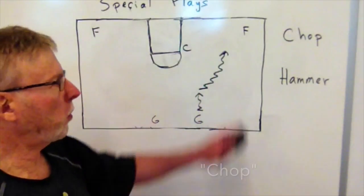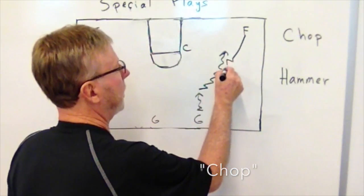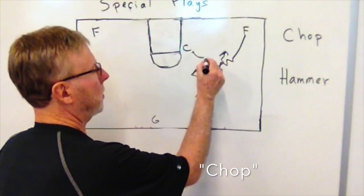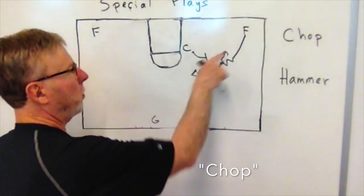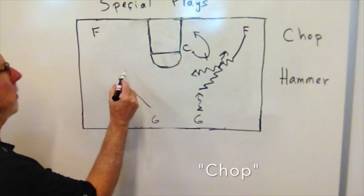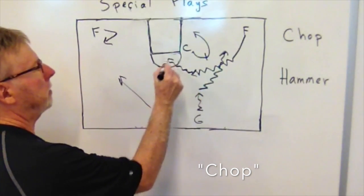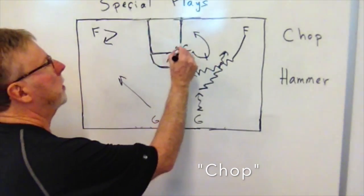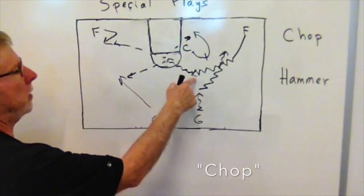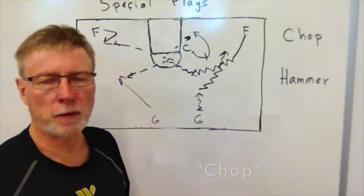On Chop, there's a hard dribble toward the forward, who times a ball exchange with that guard. The center sets a pick on the forward's defender as he comes around and rolls to the basket. The guard fans out. Coming around, we're looking for the layup, or we can make the pass for a three, or drop it off to the center. We have all kinds of options on what we call the standard Chop play.